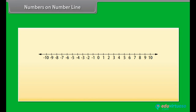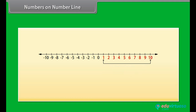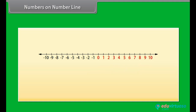On the number line, numbers 1, 2, 3, 4, and so on are called natural numbers. The natural numbers are denoted by the symbol N. If we include the number 0 with the natural numbers, then the numbers are called whole numbers. The whole numbers are denoted by the symbol W. All these numbers together with negative numbers are called integers. The integers are denoted by symbol Z.